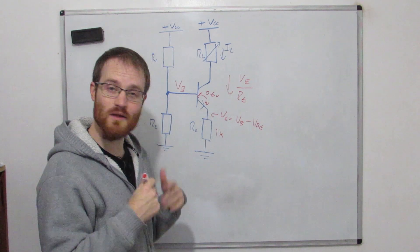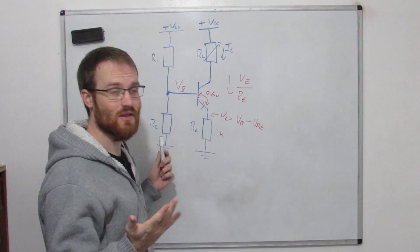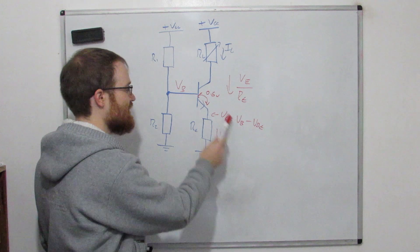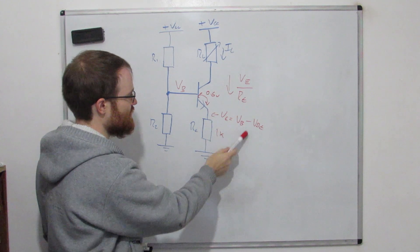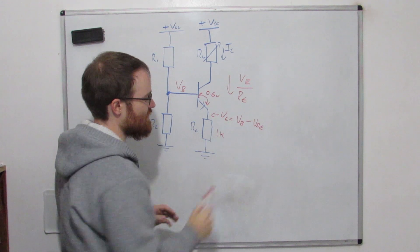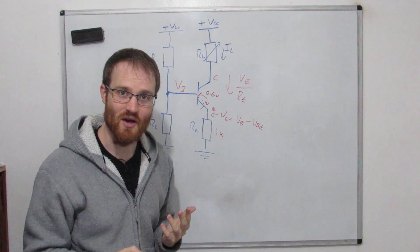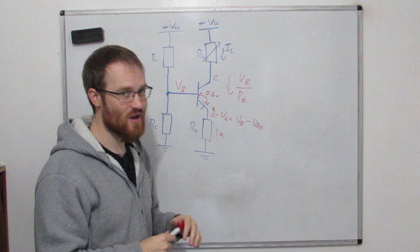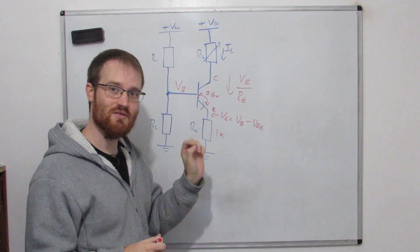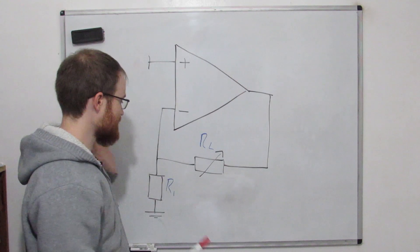The problem with this circuit is that we don't really know what the VBE voltage is — we approximate it at 0.6V but it's not exact. Our current depends on this value because we set VB deliberately, but the current is actually set by VE, which has VBE subtracted from it. We're never going to get 100% accuracy because we don't know exactly what VBE is. The temperature of the transistor can also change VBE, so if you want a precision current source you need a better design.